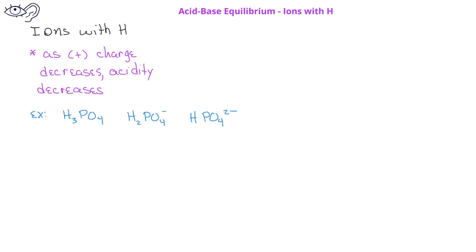Another factor to consider is ions that have a hydrogen. In general, as the positive charge decreases, ions become less acidic. So if we have, for example, phosphoric acid H3PO4 and the dihydrogen phosphate ion H2PO4- and the hydrogen phosphate ion HPO4-, we would be able to determine that the phosphoric acid H3PO4 is the stronger acid because it has the least negative positive charge.